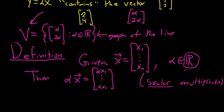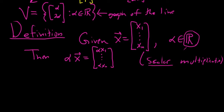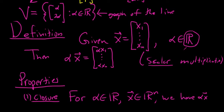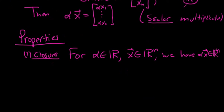There are several properties for scalar multiplication. The first one is closure. Closure for scalar multiplication says that for any real number alpha and any vector x in R^n, we have a new vector which also exists in R^n. So the vector alpha x also belongs to R^n. It's kind of obvious from the definition, but it's worth giving it a name. Vectors are closed under the operation of scalar multiplication. A real number times a vector is always a vector.